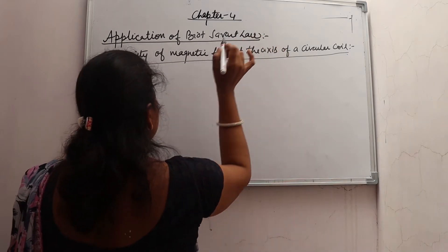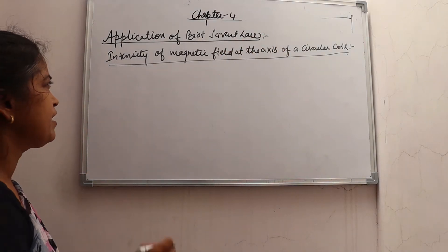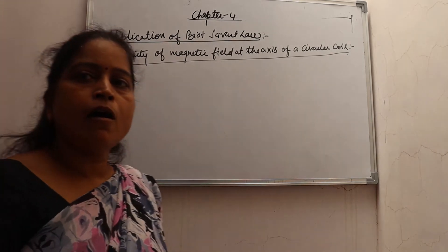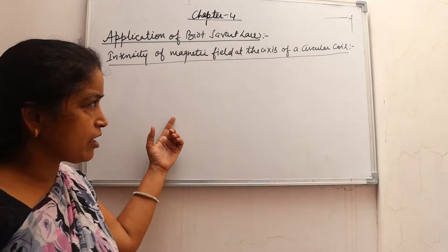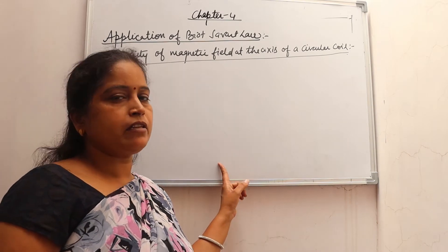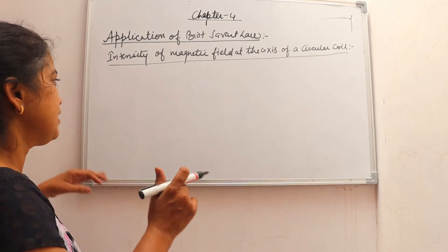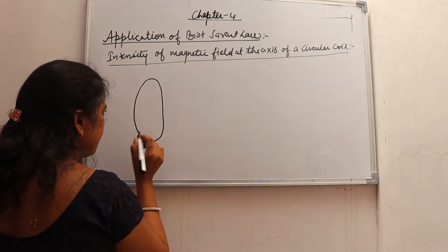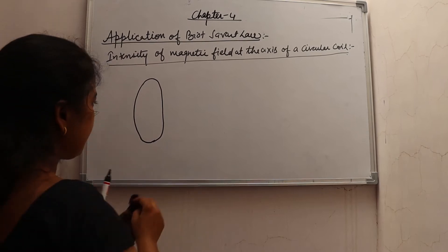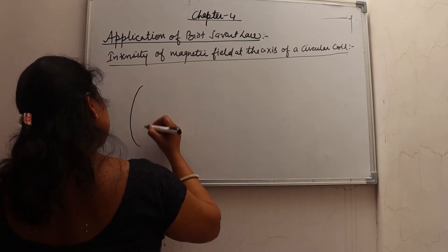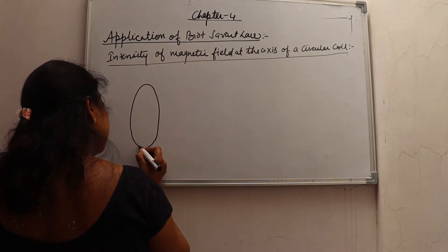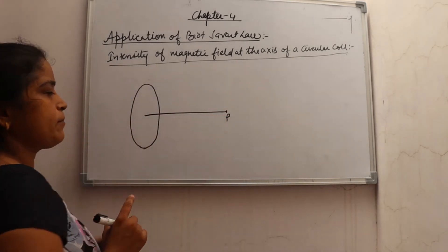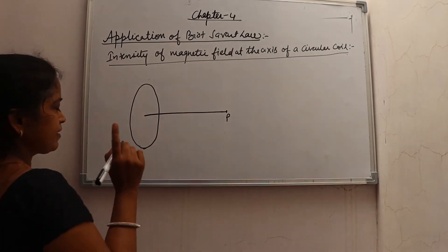Now the application of Biot-Savart Law — in our syllabus there is only one application: Intensity of magnetic field at the axis of a circular coil. We will also derive the value at the center. You should know that this question is very important — almost every year in board exams, a 3 marks question has come from this. See, there is a circular coil placed perpendicular to the plane. There is a point P on the axis of this coil where we need to calculate the intensity of the magnetic field.